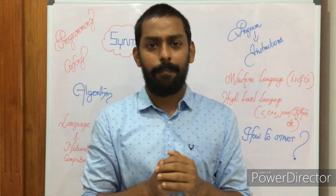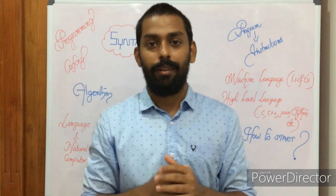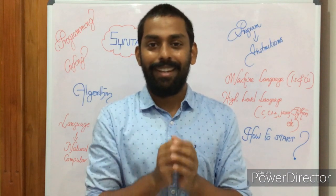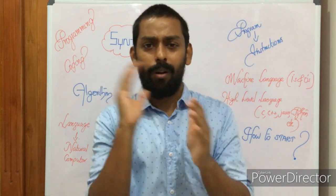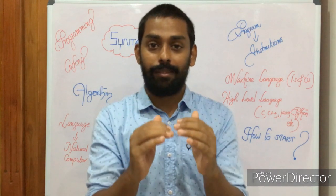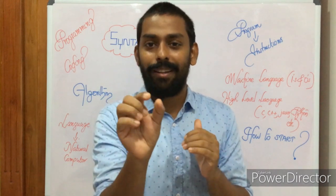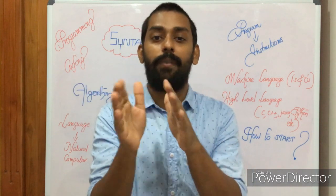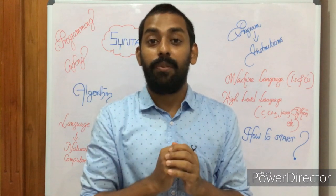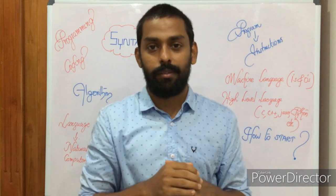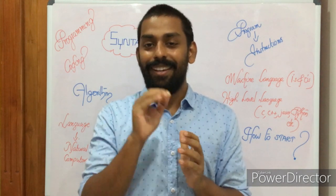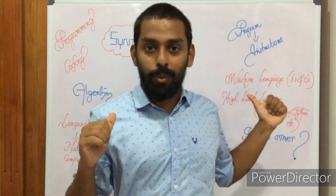How do we write programs? Here comes the importance of language. When we think of language, there are natural languages — English, Malayalam, Hindi, Tamil, German, French, and so on. Natural languages are used by human beings to communicate. But computers cannot understand all these natural languages, so there is a special kind of language called computer language. Only using that computer language can we give instructions to computers or to any kind of machine.